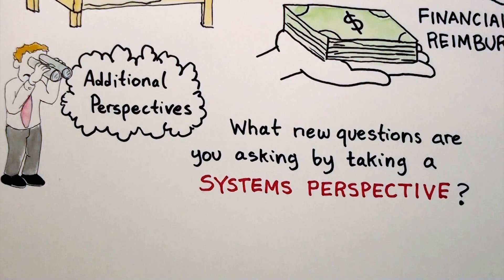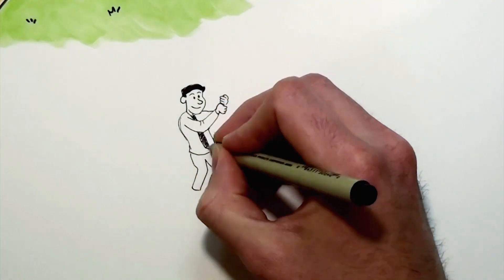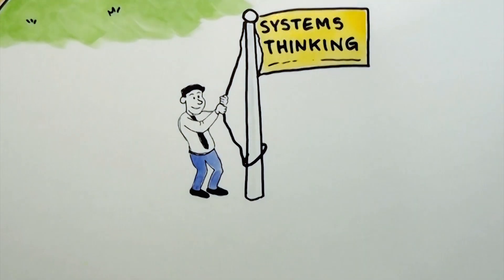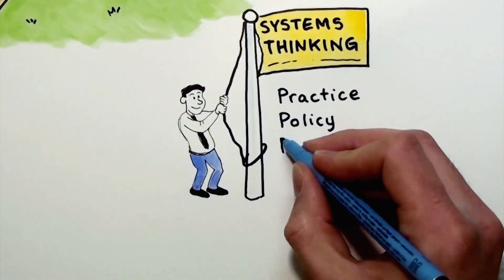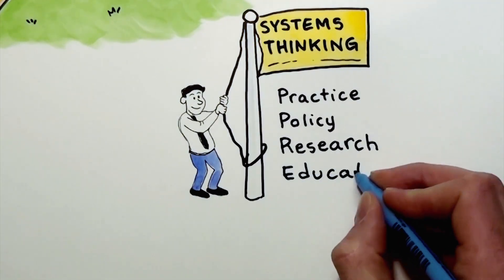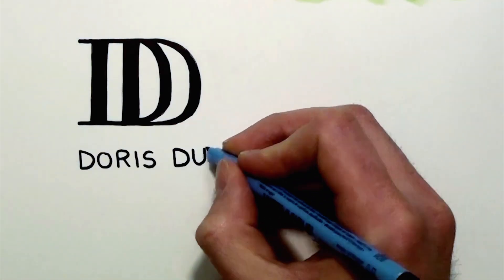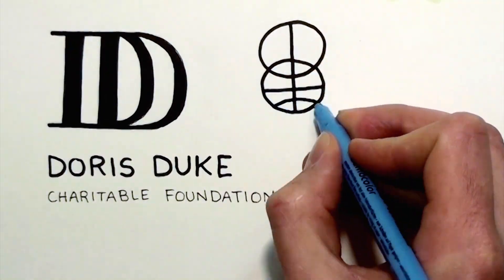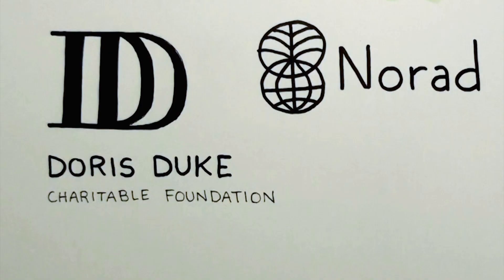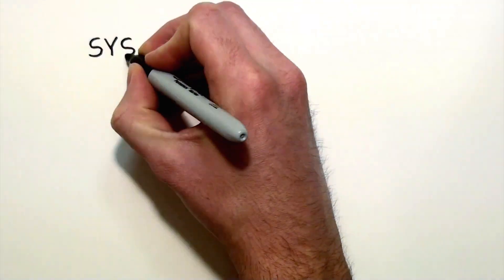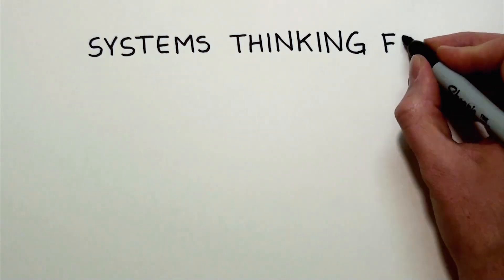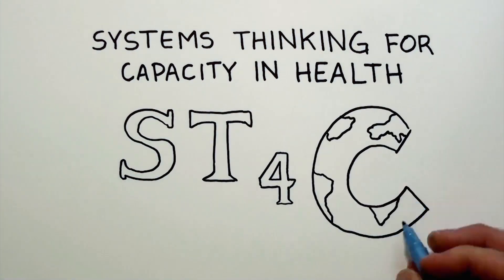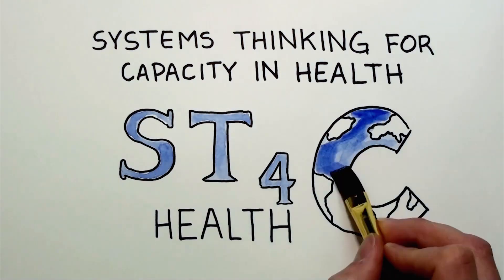We as a global society need to change the way we approach every aspect of healthcare to incorporate more systems thinking. We need a systems thinking revolution in health practice, policy, research, and education. Thanks to support from the Doris Duke Charitable Foundation's African Health Initiative and the Norwegian Agency for Development Cooperation, we have formed an organization called Systems Thinking Training for Capacity and Health to advocate for these changes, and we hope you'll join us.